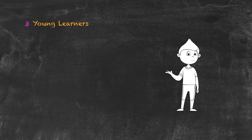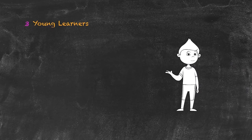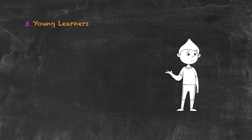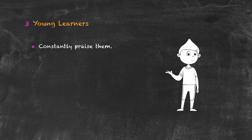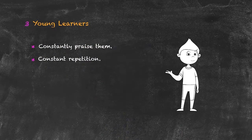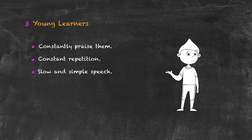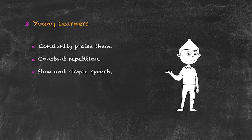Young learners covers ages roughly two to sixteen. They tend to be self-motivated and enthusiastic. To maintain their self-esteem, constantly praise them — when self-esteem is high, they learn more effectively. Do lots of repetition in the form of verbal drills and singing songs. Make sure your speech is slow and simple, as there's little point using language they don't even know in their own native language.